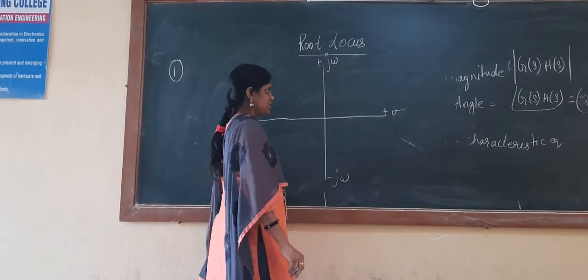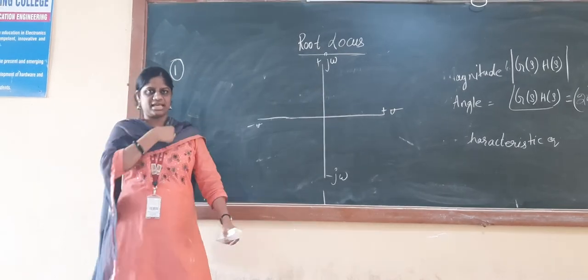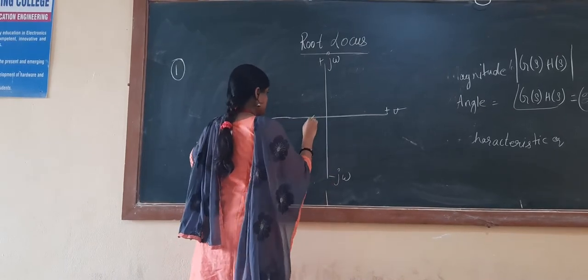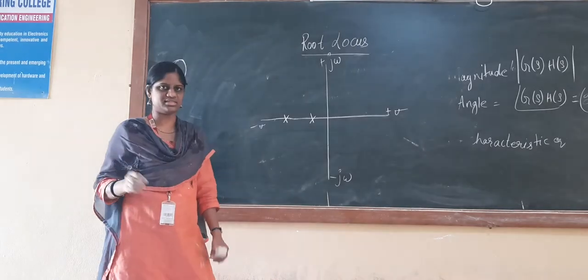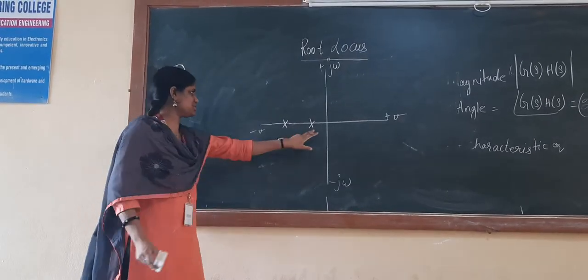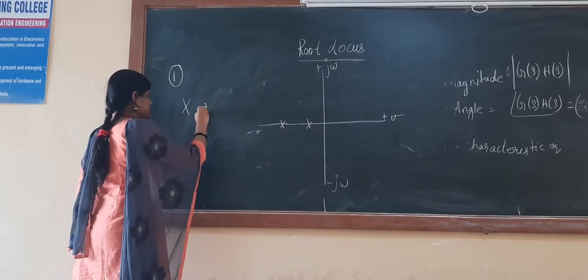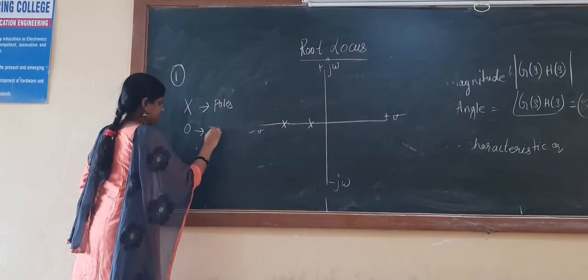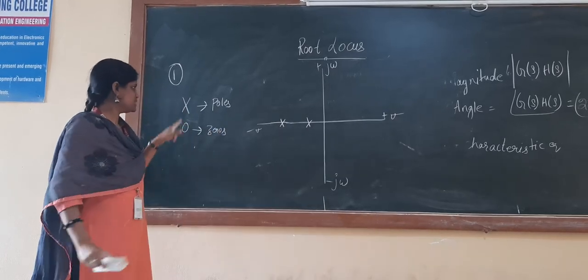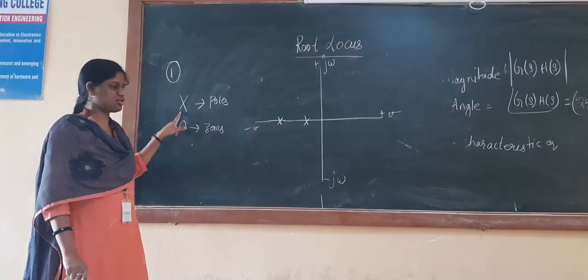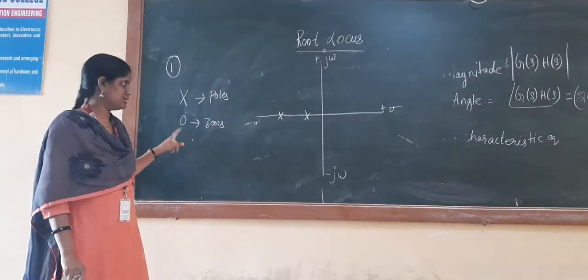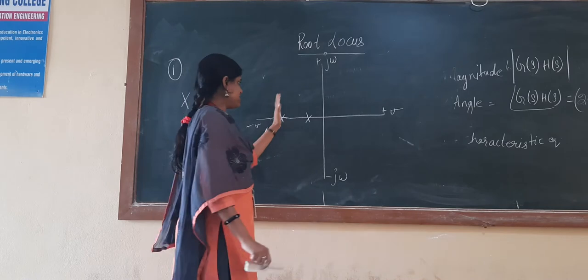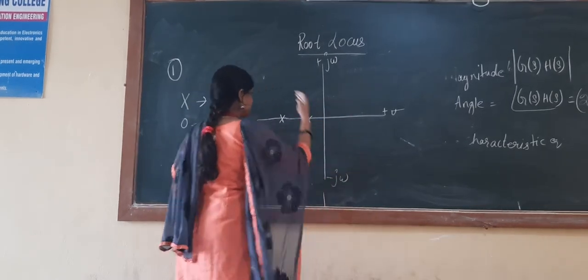To the S-plane, you need to plot the number of zeros and number of poles according to your transfer function. Poles are represented with a cross mark symbol, and zeros are represented with a small circle. For example, suppose I have two poles located at certain positions in the S-plane.